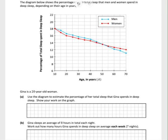Of the people surveyed, so we have men and women, men along the blue and red for women. Okay, so Gina is a 20-year-old woman. Use the diagram to estimate the percentage of her total sleep that she spends in deep sleep.